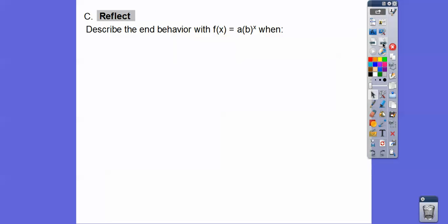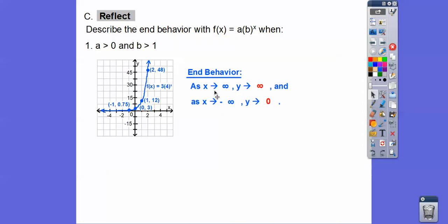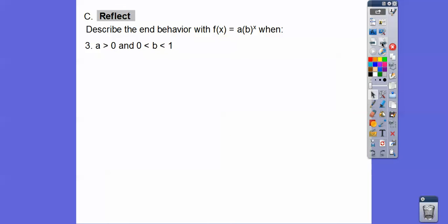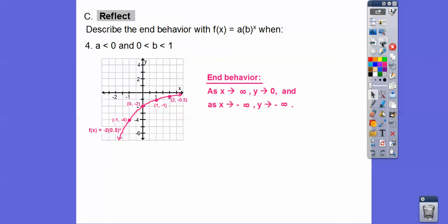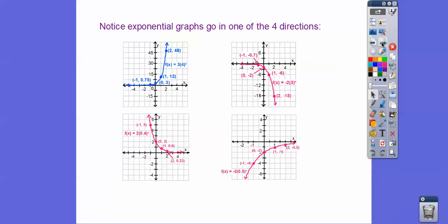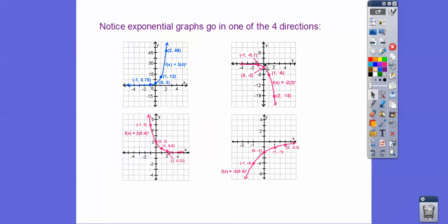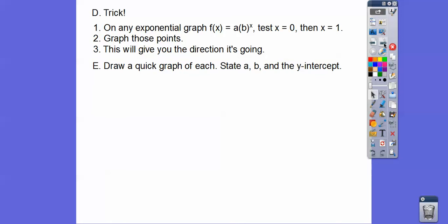Let's describe the end behavior patterns. When a is positive and b > 1, as x→∞ y→∞, and as x→−∞ y→0. When a is negative and b > 1, the graph flips down. When a is positive and b is a fraction, as x→−∞ y→∞. When a is negative and b is a fraction, y shoots down to the left. All exponential graphs go in one of those four directions.